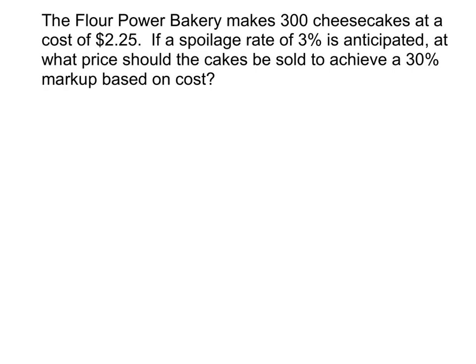All right, we have the Flour Power Bakery makes 300 cheesecakes at a cost of $2.25 each. If a spoilage rate of 3% is anticipated, at what price should the cakes be sold to achieve a 30% markup based on cost?